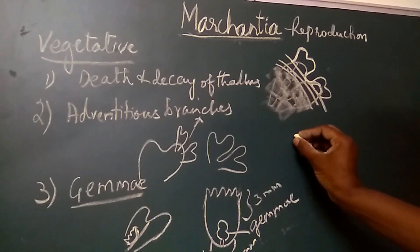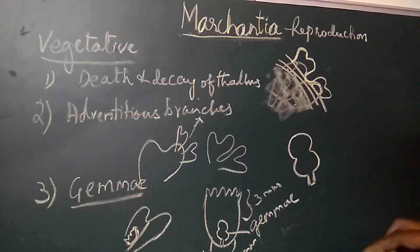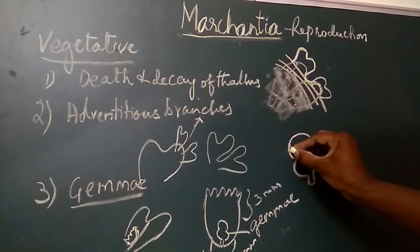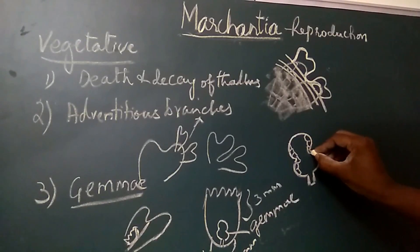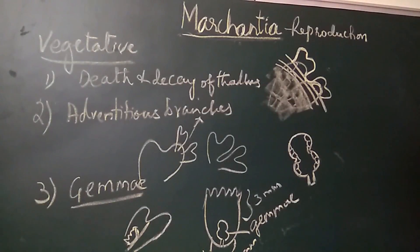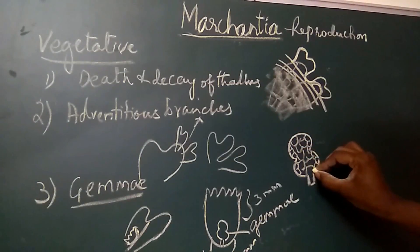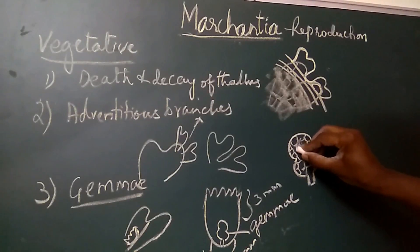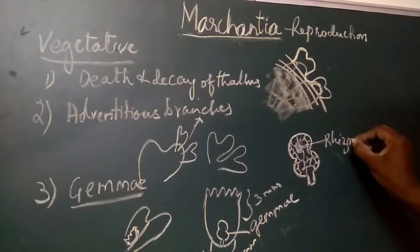The Gemma is biconvex in structure with constrictions on two sides, or two notches on the bilateral sides. The superficial cells near the two notches have a layer of growing cells or apical cells. All the cells of the Gemma are green in color and contain chloroplasts. However, a few cells are colorless — these give rise to rhizoids and are called rhizoidal cells.